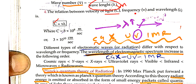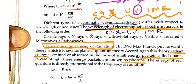Speed of light is 3 into 10 to power 8 meter per second. Electromagnetic waves differ with respect to wavelength or frequency. Wavelength of electromagnetic spectrum increases in the following order.